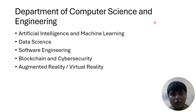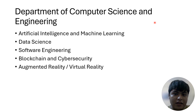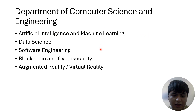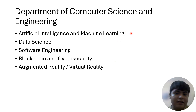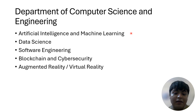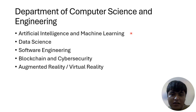The Department of Computer Science and Engineering has five streams available: Artificial Intelligence and Machine Learning, Data Science, Software Engineering, Blockchain and Cyber Security, and AR/VR (Augmented Reality and Virtual Reality). If you are pursuing CSE and you choose one of these streams, say AI/ML, then AI/ML is your specialization. But if you are pursuing Electrical Engineering and you take up AI/ML, then that is your minor stream, not your specialization stream.